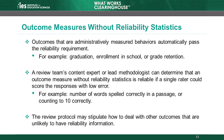A reliability statistic is sometimes not available for an outcome measure. In some cases, even though the study doesn't present a reliability statistic, the measure can still meet the reliability requirement. The WWC automatically considers behavior outcomes measured using administrative data reliable because these outcomes are straightforward to measure. Examples include graduation from high school, school enrollment, and grade retention. Other outcomes are so straightforward to measure that a content expert or lead methodologist for a review team can determine that a single rater could score them with low error. For example, coders can very accurately score measures of how many words a child spelled correctly in a passage, or whether or not a child counted to 10 correctly.